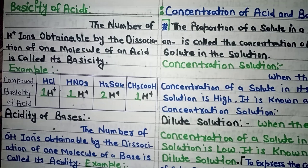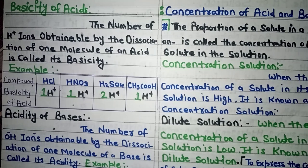Moving to page 61: after the classification of acid and base, there is a table on basicity and acidity, and some questions to solve. The first topic is basicity of acid. The definition: the number of H+ ions obtainable by the dissociation of one molecule of an acid is called its basicity. So when we dissolve an acid in water, the number of H+ ions released tells us the basicity of that acid.